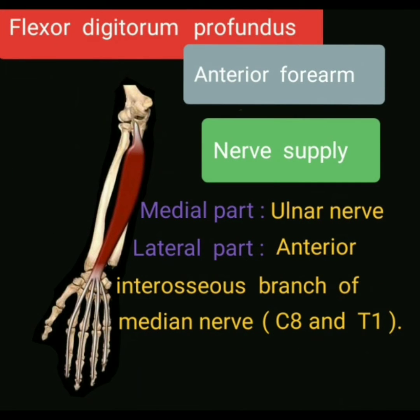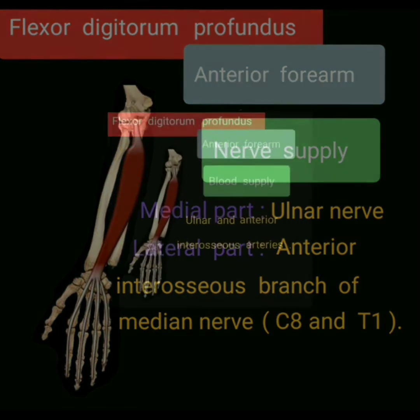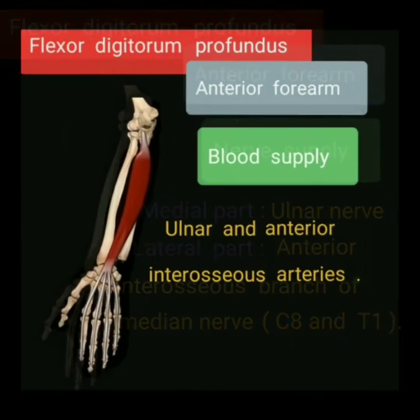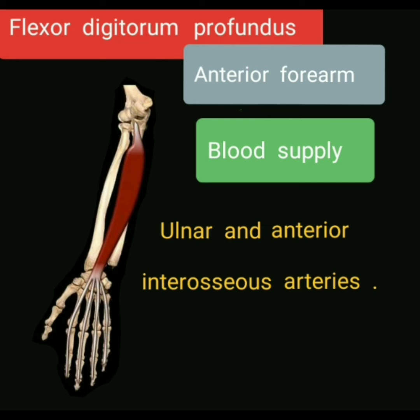Nerve supply: the medial part is supplied by the ulnar nerve, and the lateral part is supplied by the anterior interosseous branch of the median nerve, with a root value of C8 and T1. Blood supply: the flexor digitorum profundus muscle is supplied by the ulnar and anterior interosseous arteries.